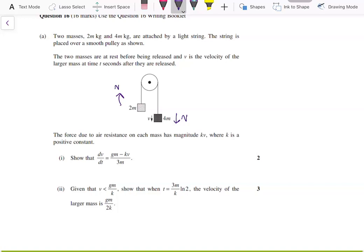We have a force of air resistance of magnitude kv, where k is a positive constant and v is the velocity. The first part is to find what the acceleration dv/dt is.